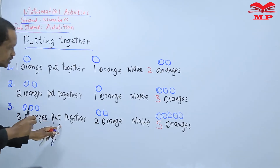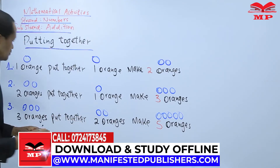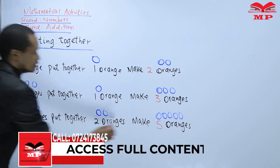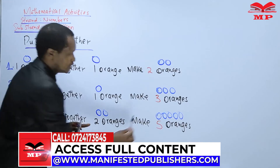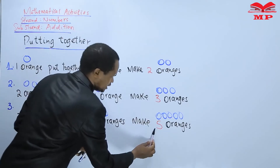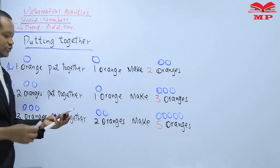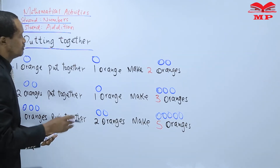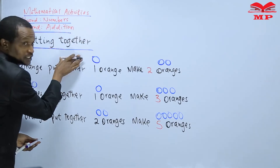Look at number three: three oranges put together two oranges. Three and two — total is one, two, three, four, five. So the answer is five oranges. So, learners, that is what we are going to learn today — putting together, which means addition. Addition means putting together.